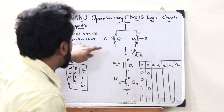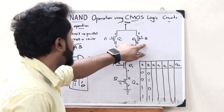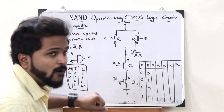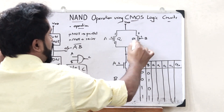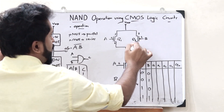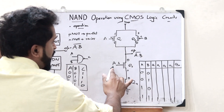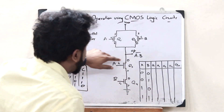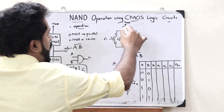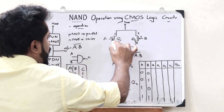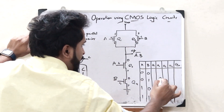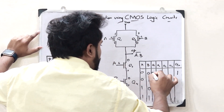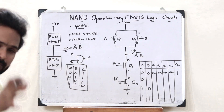When A and B are both 0: in the case of PMOS transistors, when 0 is given as input, the transistor turns on, so current flows. The NMOS transistors, when given 0 as input, turn off — they become open-circuited. So the VDD flows through the PMOS path and goes to the output, giving output 1. Q1 and Q2 are on, whereas Q3 and Q4 are off.